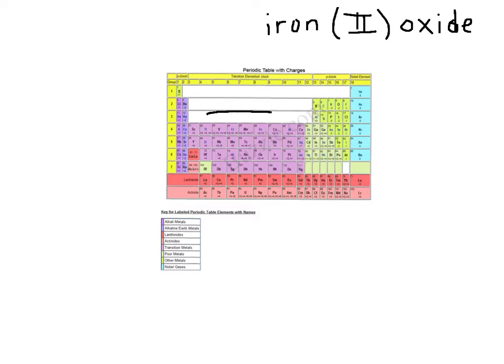The multivalent metals are found in the middle of your periodic table. They're the ones that have more than one possible ion charge.